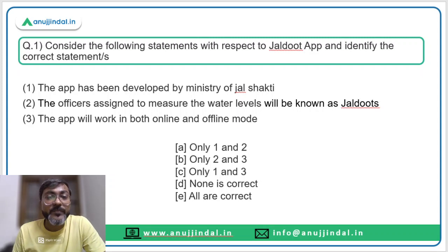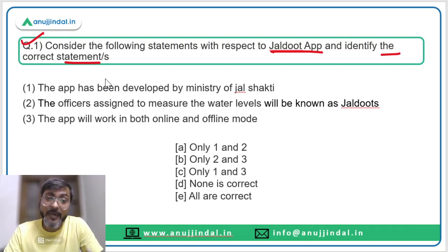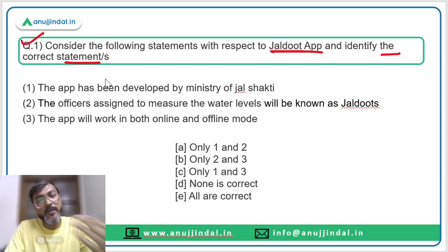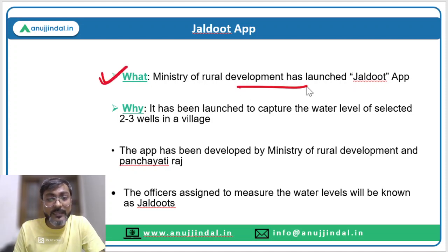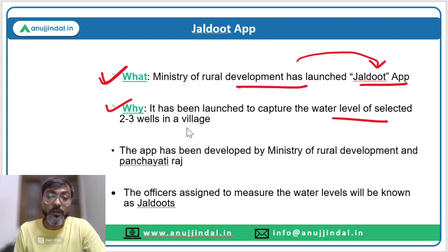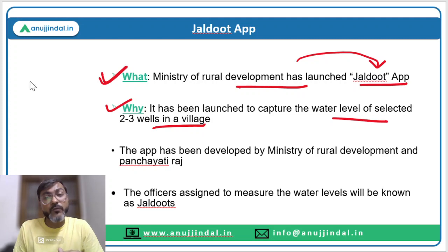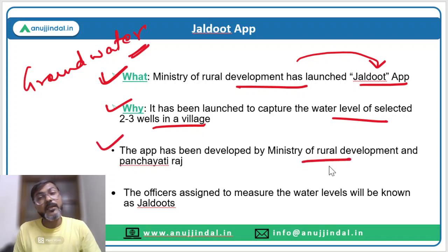The first question says: consider the following statements with respect to Jal Doot app and identify the correct statement. We have discussed this in the previous class, but we are revisiting it because there is more information. The Ministry of Rural Development has launched this Jal Doot app with the objective of capturing the water level of selected two or three wells in a village, which gives information about the groundwater level in those villages.